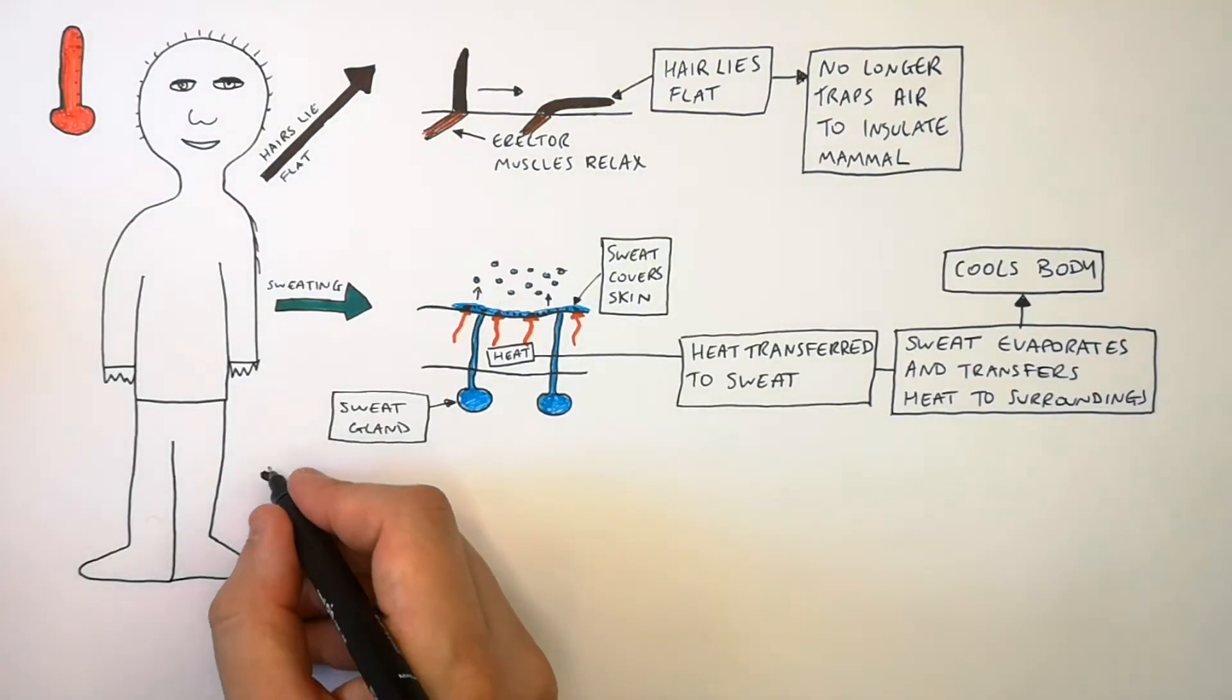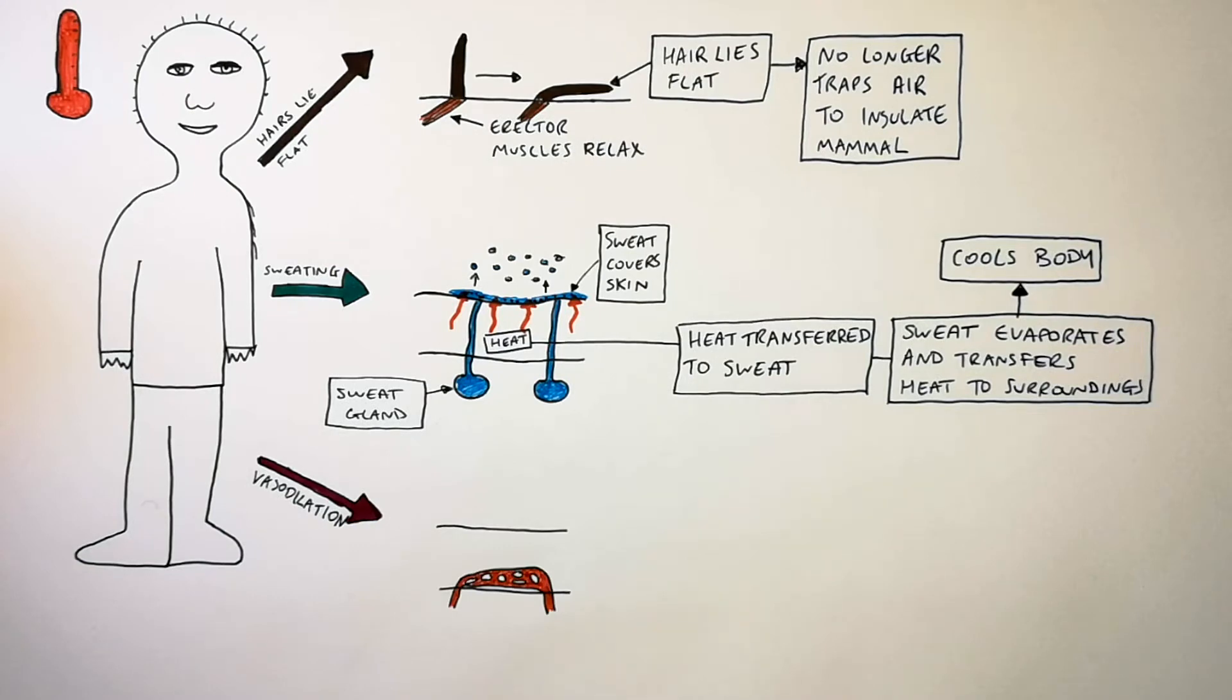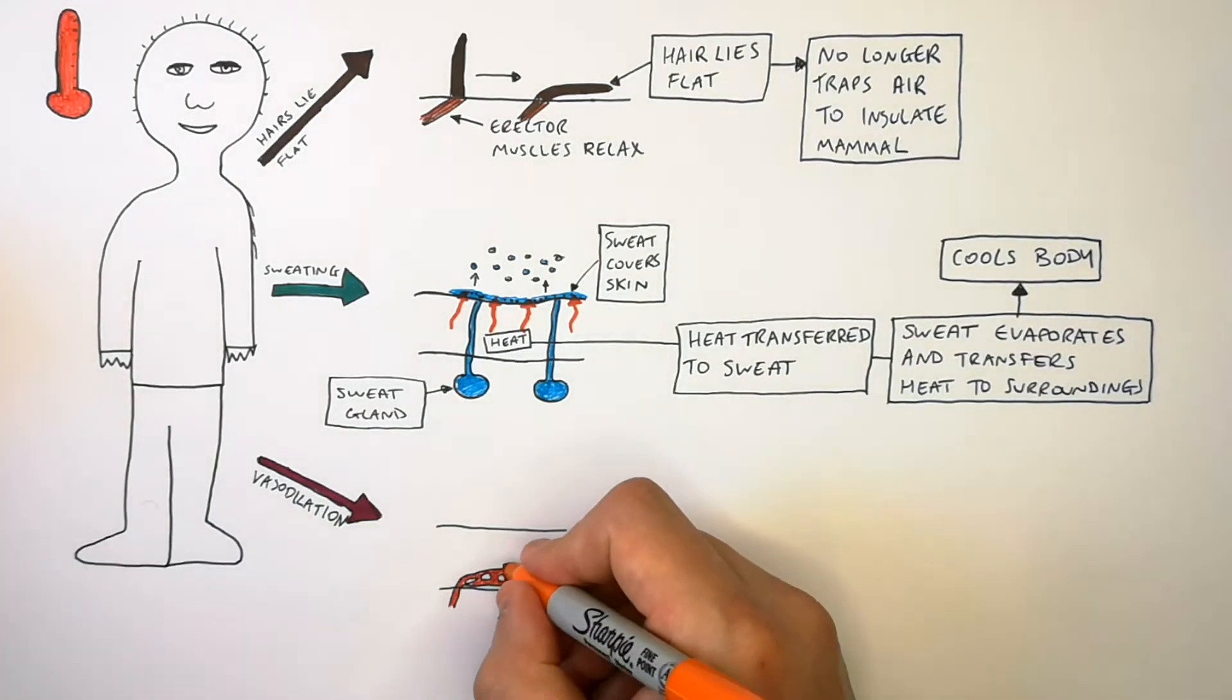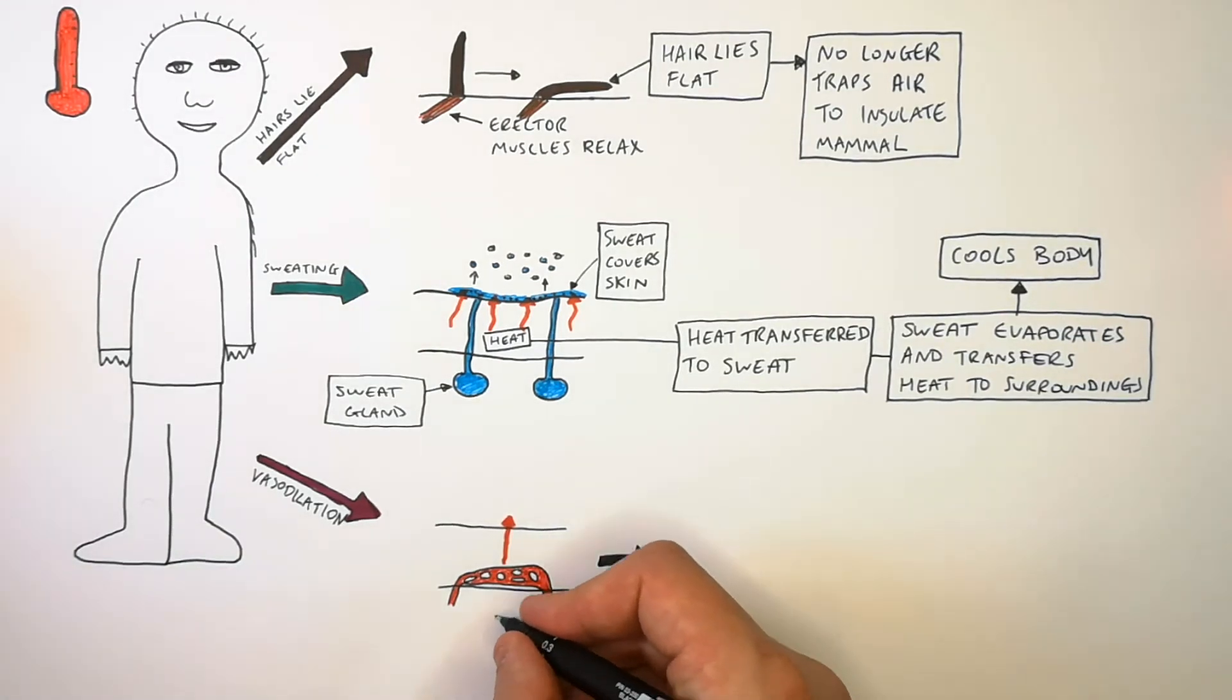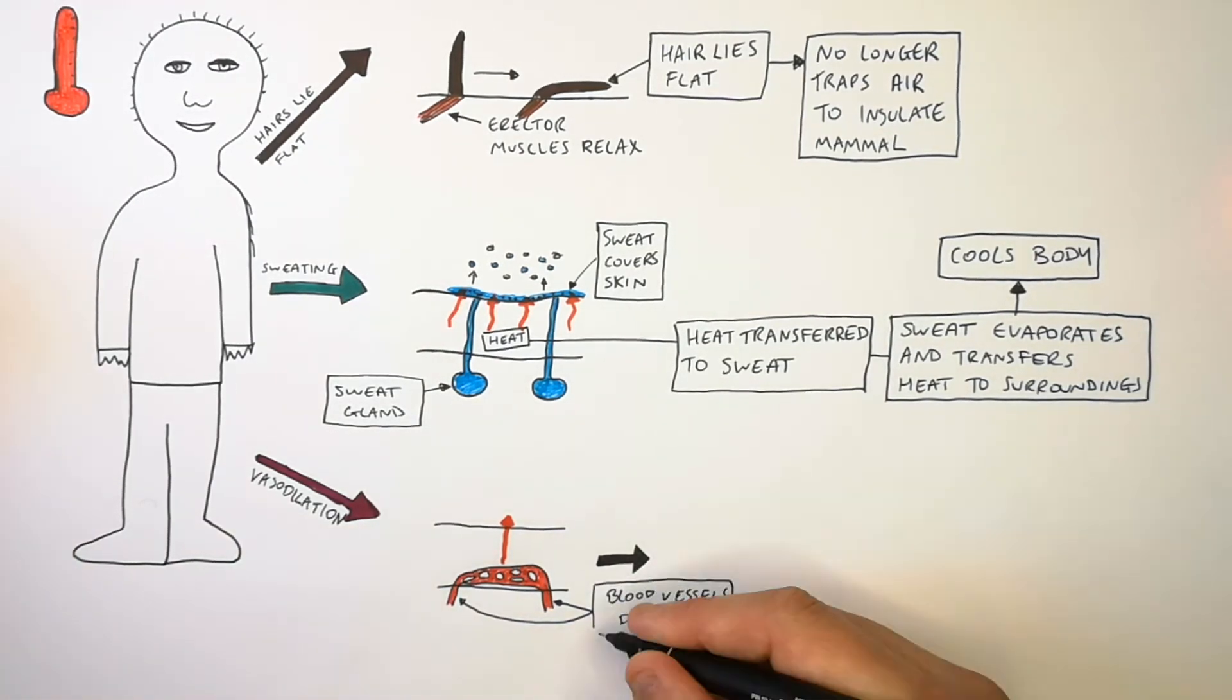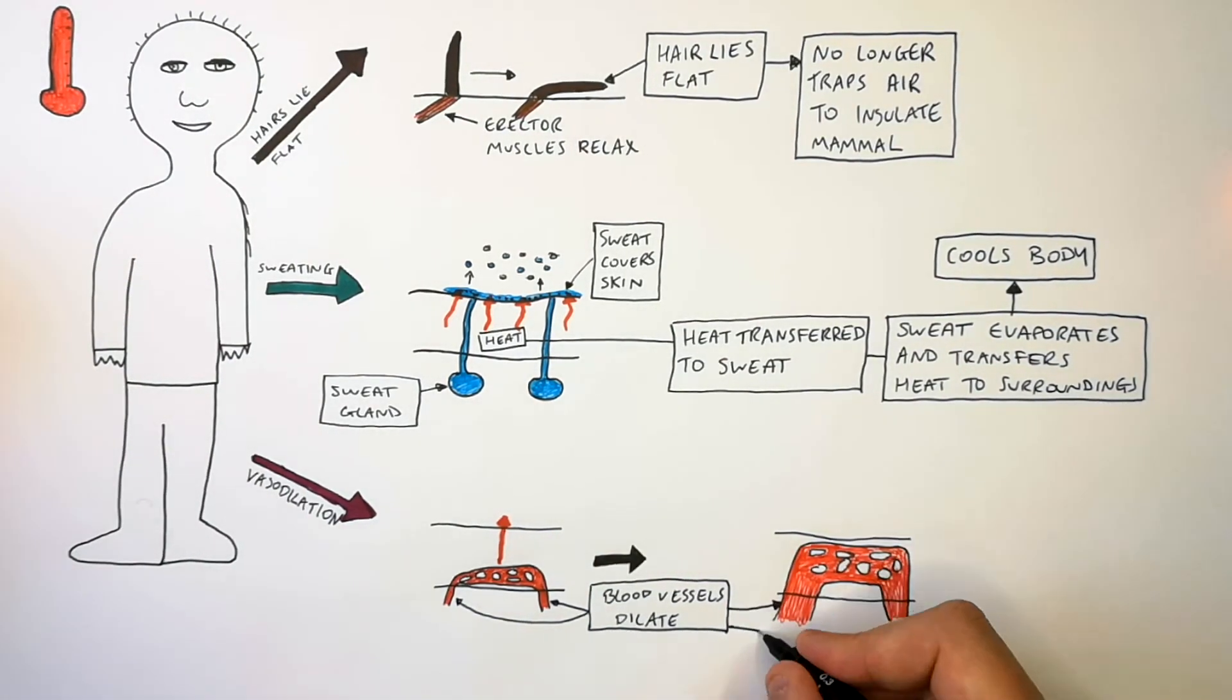When we're too hot we undergo vasodilation. So when our blood vessels are constricted not much heat can be transferred to the surroundings. However during vasodilation the blood vessels dilate which means that the blood vessels widen and the capillaries are brought to the surface of our skin.